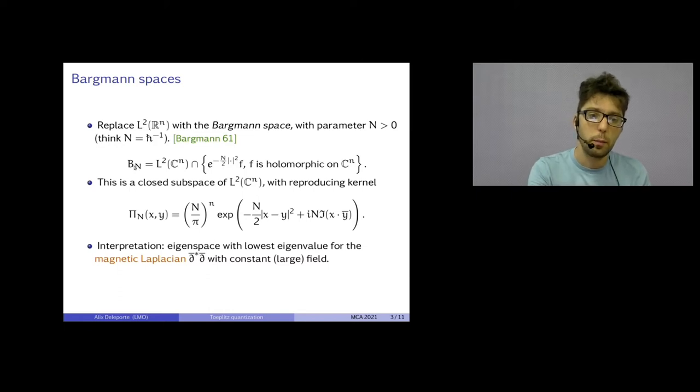You can interpret this Bergman space as the first Landau level for the magnetic Laplacian with constant field. What I'm saying is that holomorphic functions satisfy d-bar equals zero. And d-bar is not a self-adjoint operator, but d-bar star d-bar modulo this weight is a self-adjoint operator. And the kernel of this space, the lowest level of this magnetic Laplacian is precisely this Bergman space.